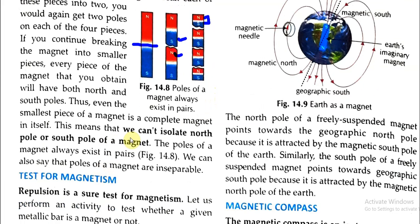This means that we can't isolate the north pole or south pole of a magnet. We can't separate them from each other — they always exist as a pair.